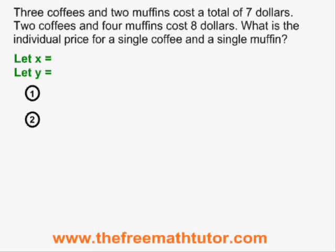This video illustrates how to solve a word problem involving a system of two equations with two variables. The question is: three coffees and two muffins cost $7, two coffees and four muffins cost $8. What are the individual prices for a coffee and a muffin?